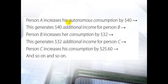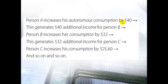Person A increases his autonomous consumption by $40 — meaning this person spent $40 on autonomous consumption. This increase is not because Person A's salary went up, but because of another reason. For example, his car suddenly broke down and he had to spend $40. This $40 goes to Person B — the mechanic who fixes Person A's car. This generates $40 additional income for Person B.